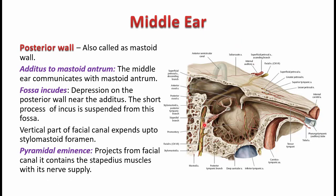There is also a bony projection called the pyramid, which is pyramid-shaped. This projection has a small opening through which the tendon of the stapedius muscle emerges. Inside the pyramidal prominence, the stapedius muscle is housed, and the tendon alone comes out through a small opening to insert into the neck of the stapes bone. Inside this, the stapedius muscle receives its nerve supply — the nerve to stapedius — which is a branch of the facial nerve.